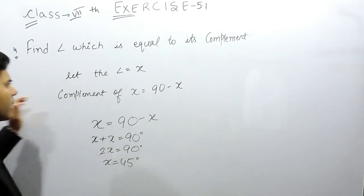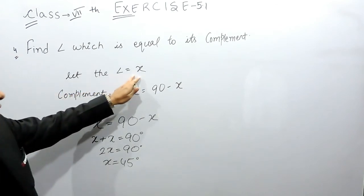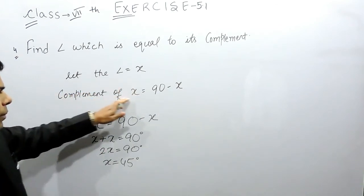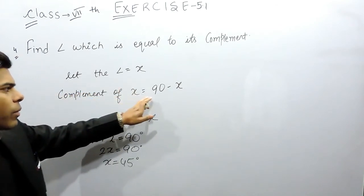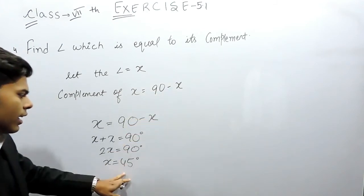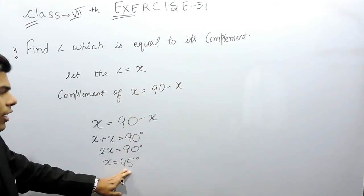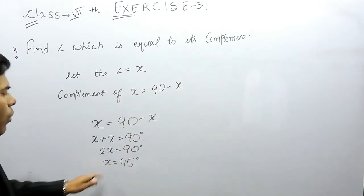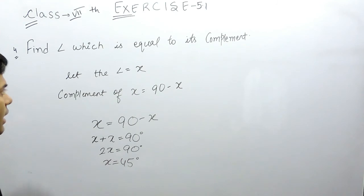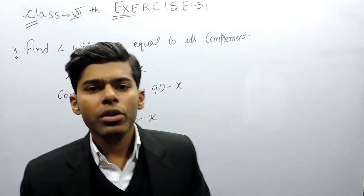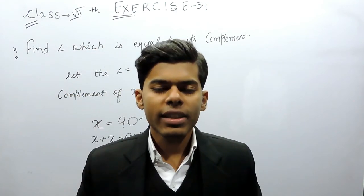This means that our angle is x, and the complement of x will be equal to 90 minus 45, which is again 45 degrees. So x is the angle which is equal to its complement. This is how you can solve this question.